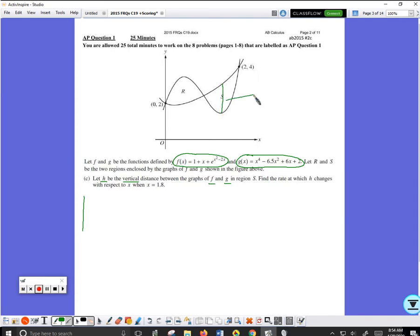That distance will be different depending on what x coordinate we are at, so h would be some function of x. Find the rate at which h changes with respect to x - we want to find dh over dx.